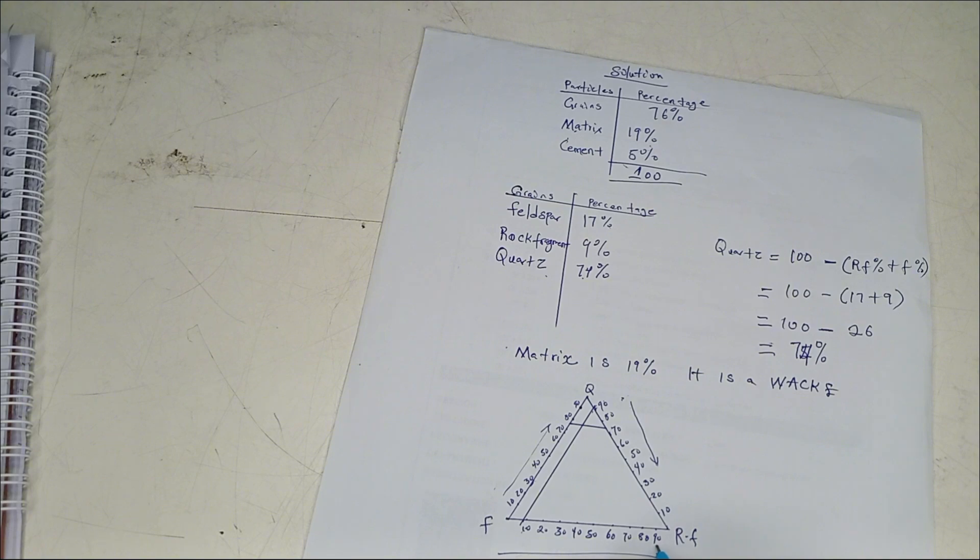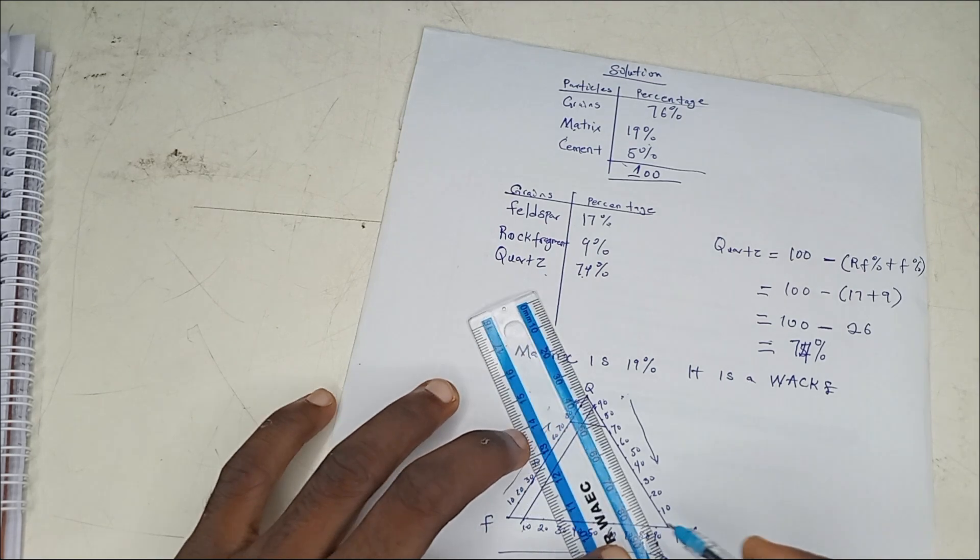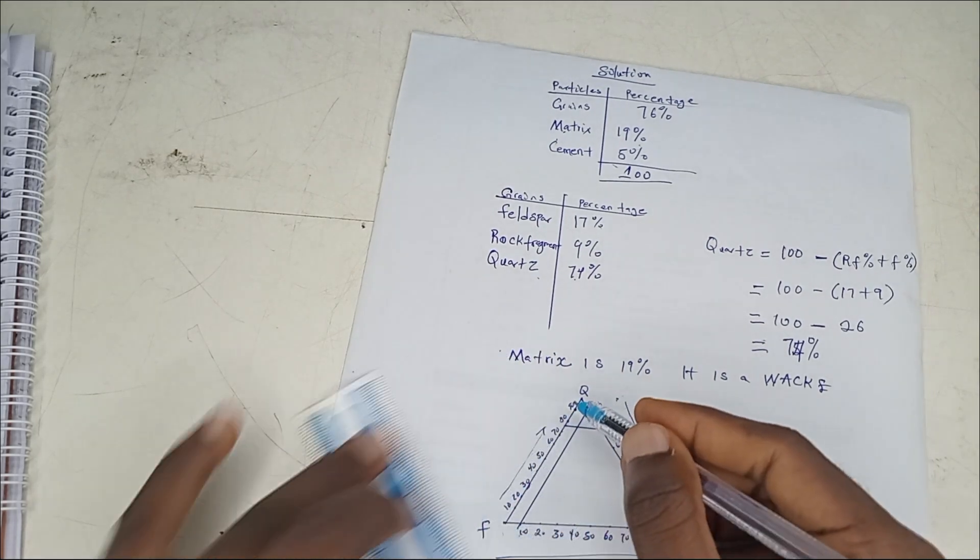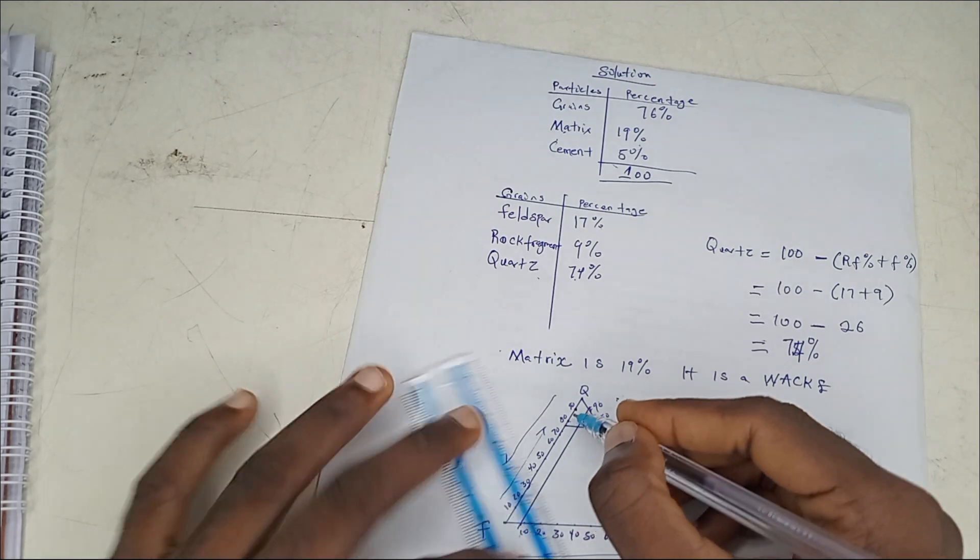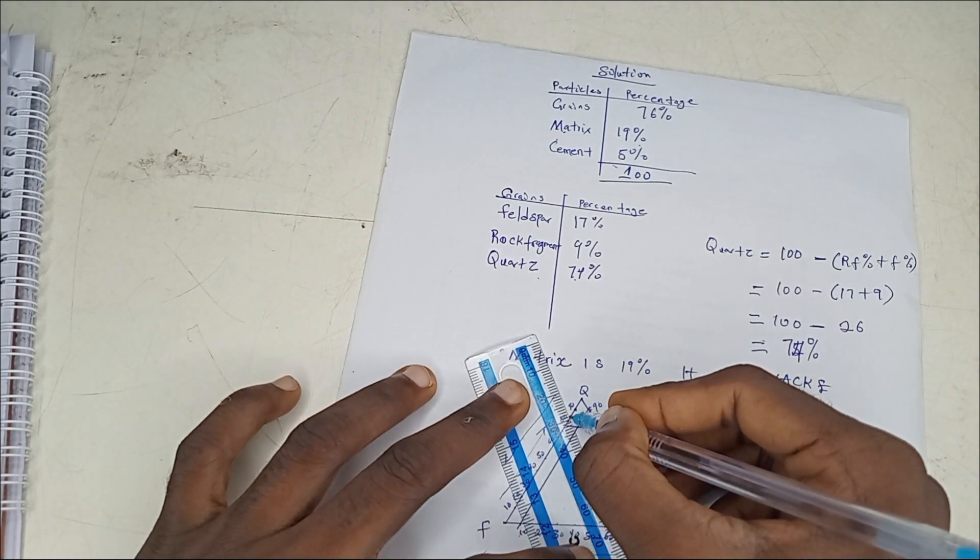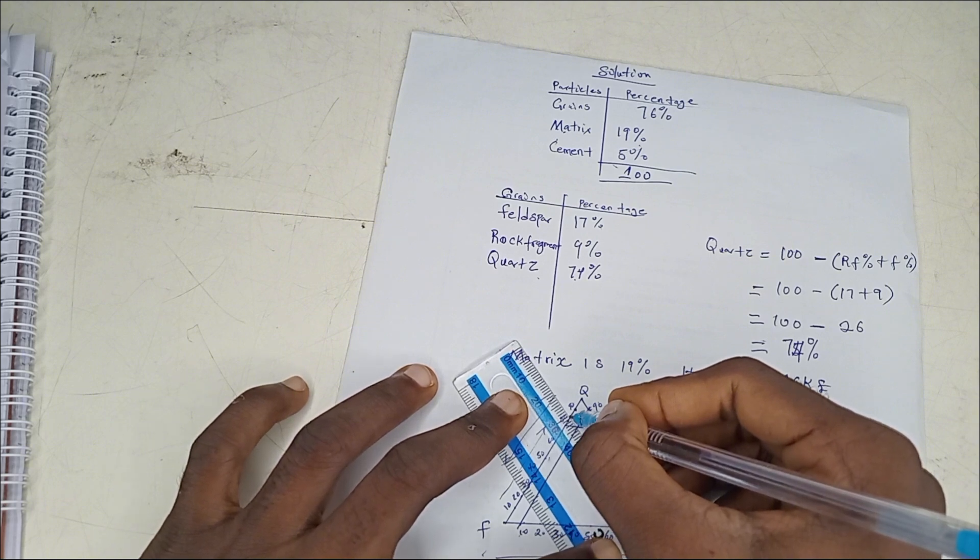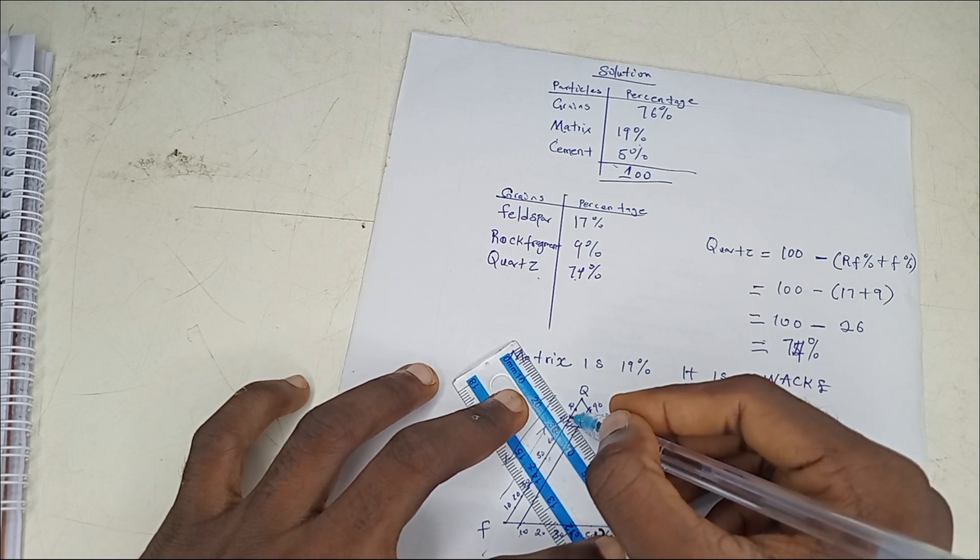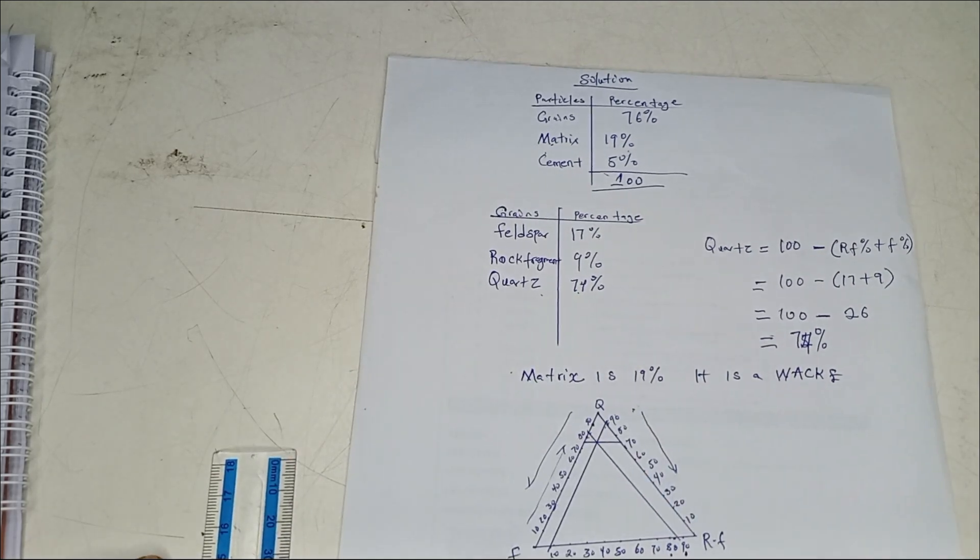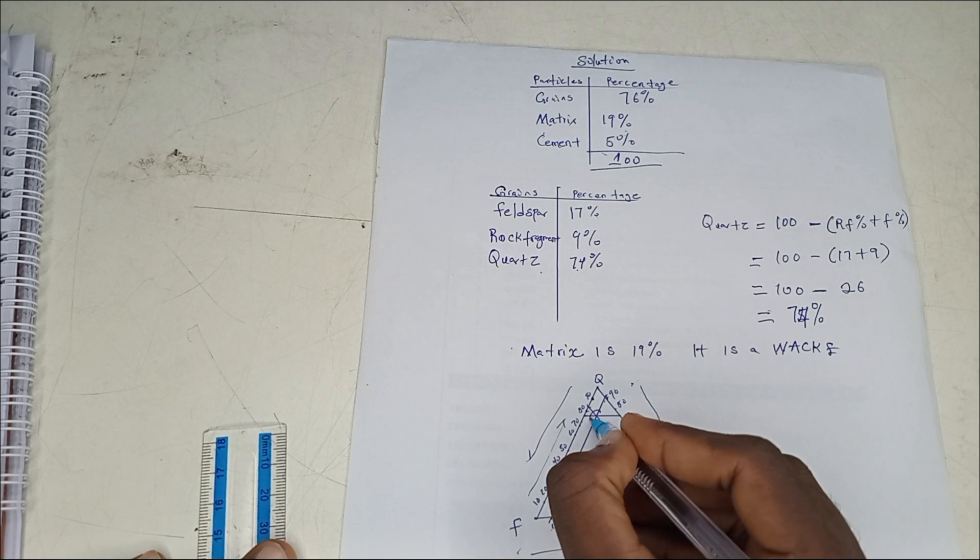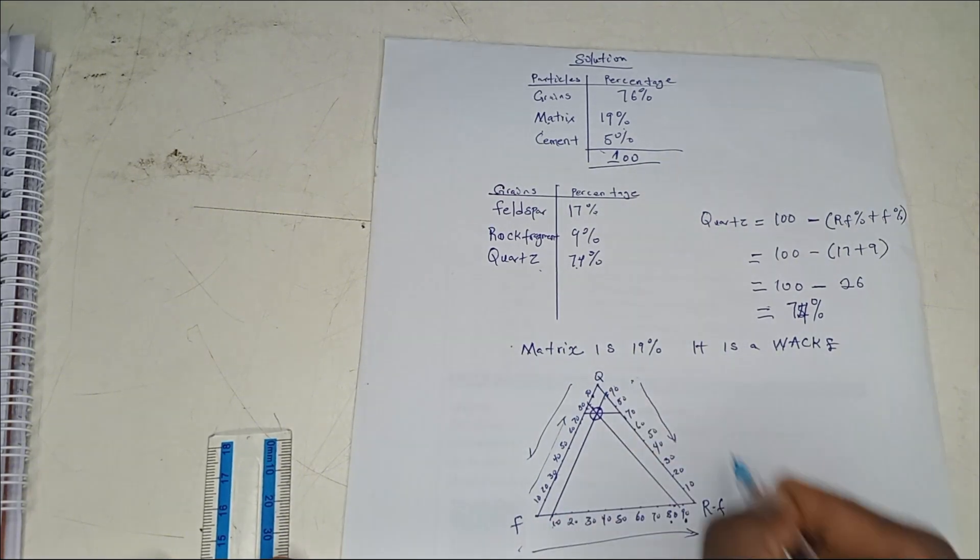Your feldspar is 17%, which is between 10 and 20, closer to 20. Here is increasing feldspar, so 17 will be around here. You can see the X already forming - that's the point. This is the location of the sandstone based on its composition on the ternary diagram.